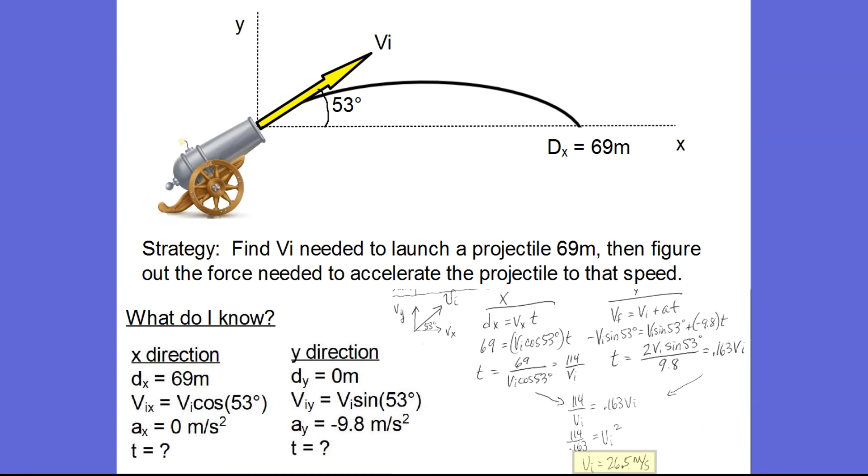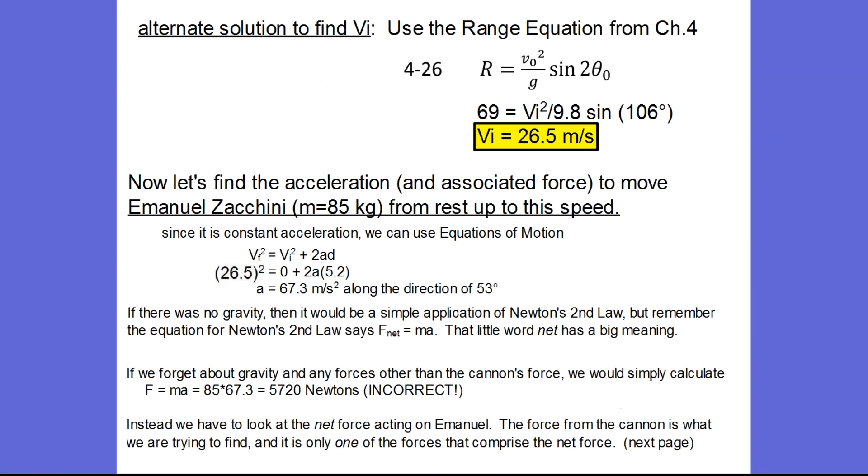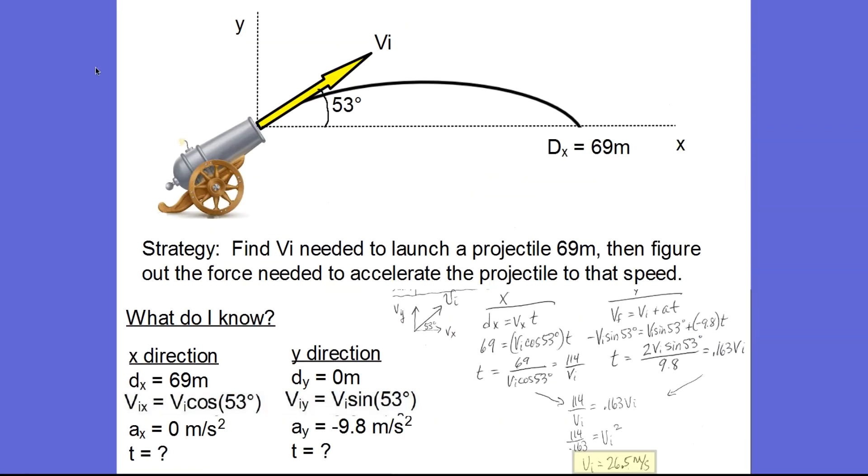If you want, there is a simpler way. You could use the range equation which was given to us in Chapter 4 and here it is and you can see we can come up with the initial velocity in a much simpler way. Just be aware this equation is not provided to you on the AP equation sheet that is provided with the AP test in May. So you have to memorize this equation and if you get it wrong, it will hose you. So it's your choice. Memorize the equation and use it or stick with our traditional way of working separately in the X and the Y. Yes, it's a little more work, but these equations are on the AP equation sheet.